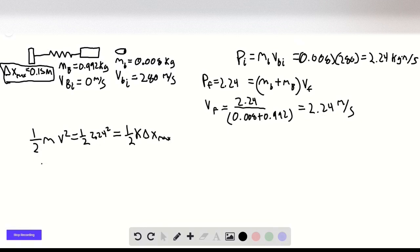If we rearrange and solve for k, k equals 2.24 squared over 0.15 squared, which is 223 newtons per meter.